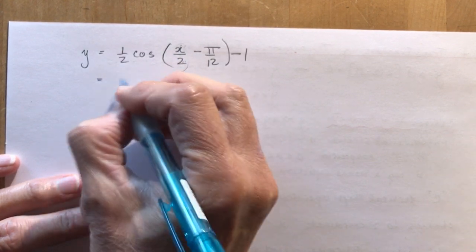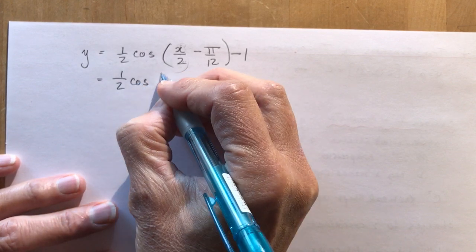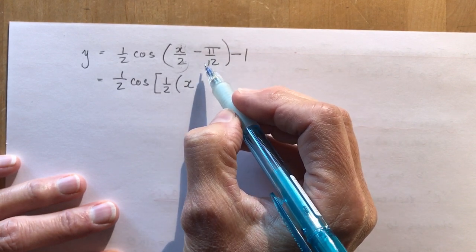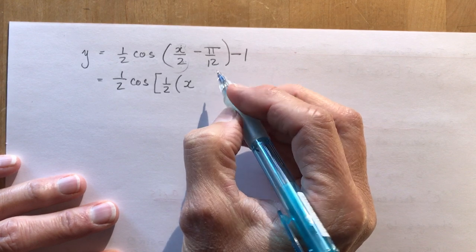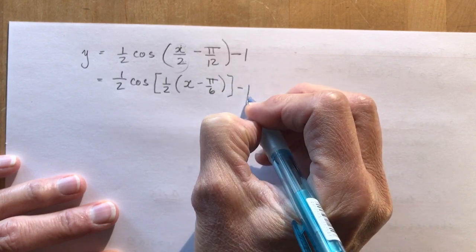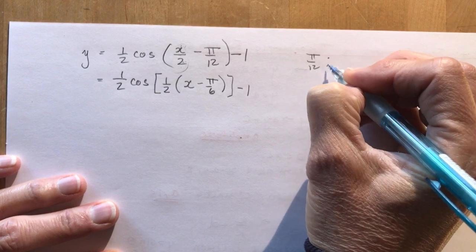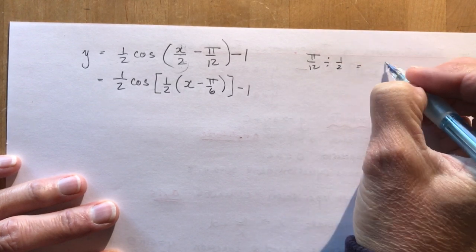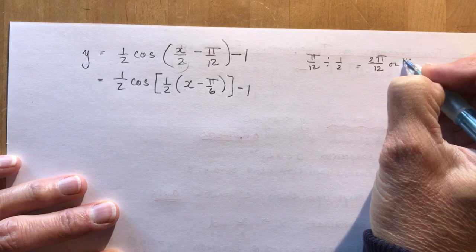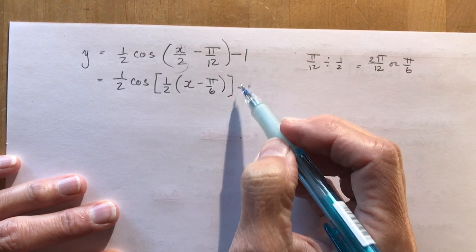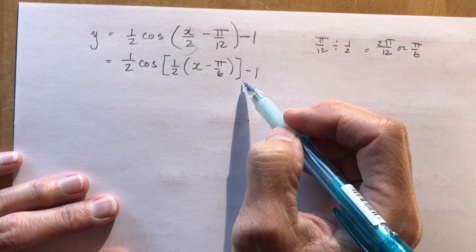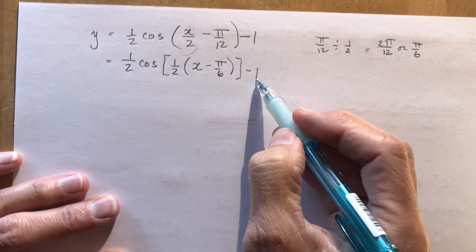I rewrite it as ½cos[½(x − π/6)] − 1. Factor out ½ from the bracket: that leaves x, and then please be careful — dividing (π/12) by ½ does not give π/24; it gives π/6, because π/12 ÷ ½ = 2π/12 = π/6. Be careful with fraction division — it's a painful mistake to make in grade 12.